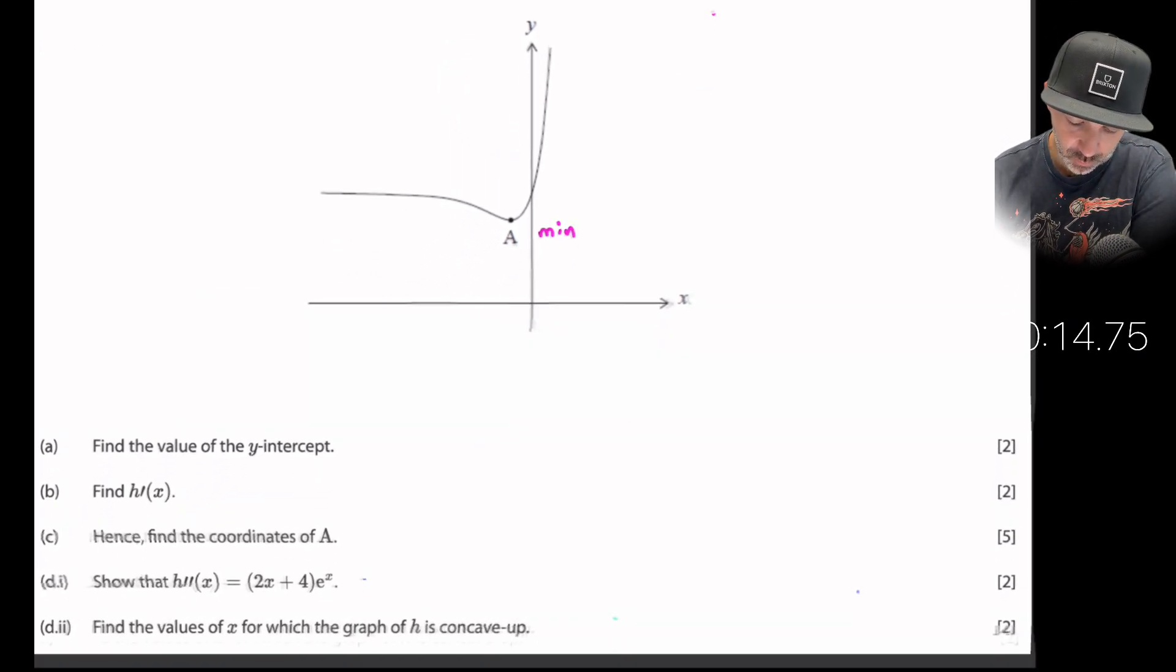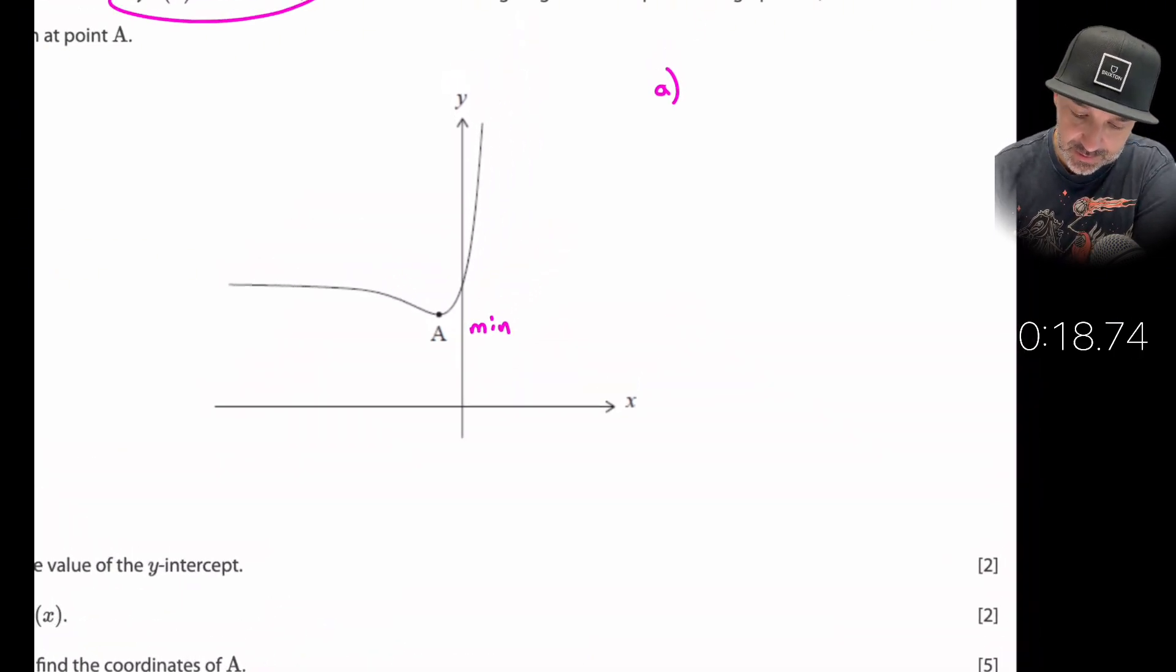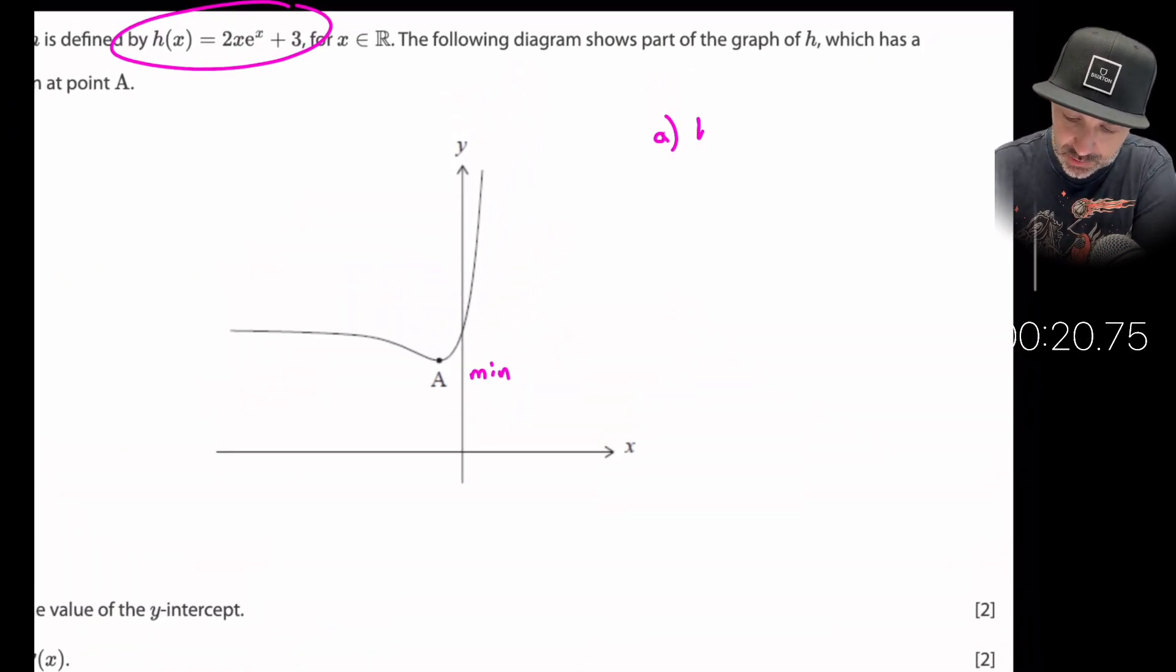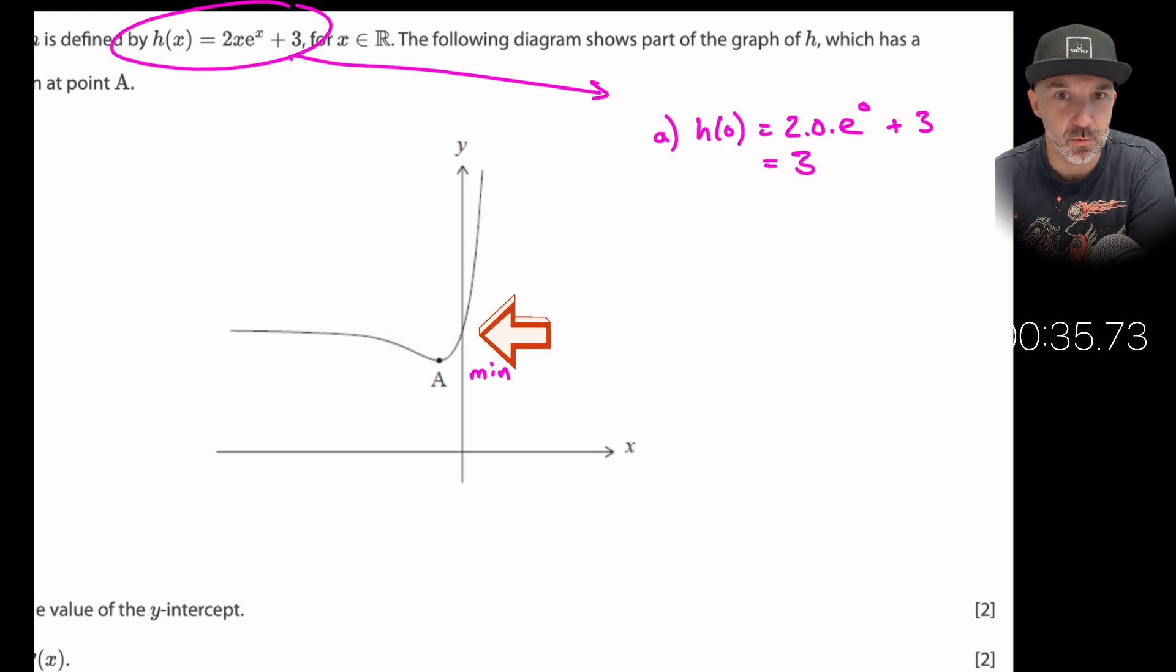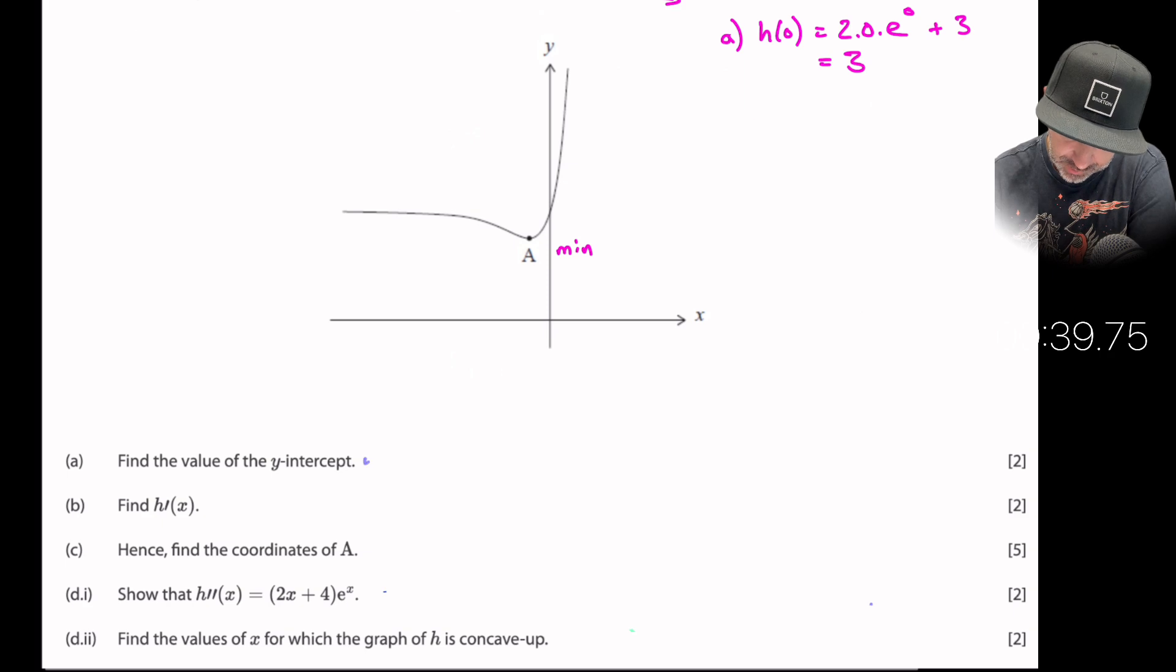Find the value of the y-intercept. So I'm just going to collate my answers up here. The value of the y-intercept is when we substitute zero in for x. So when we substitute zero into this original function we're going to get two times zero. So this expression is going to be zero plus three. So the whole thing just comes out to be three. The value of the y-intercept is y equals three and that is part a done. Let's give it a tick.